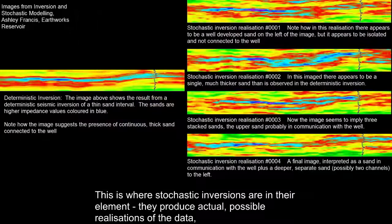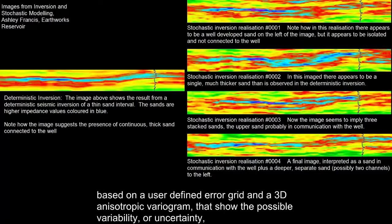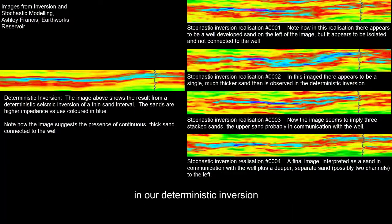This is where stochastic inversions are in their element. They produce actual possible realizations of the data based on a user-defined error grid and a 3D anisotropic variogram that show the possible variability, or uncertainty, in our deterministic inversion.